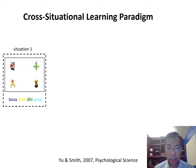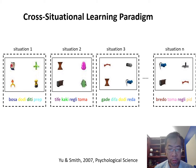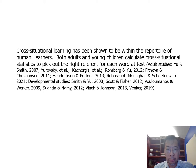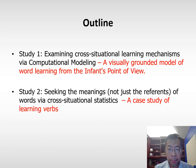This idea has been implemented by a cross-situational learning experimental paradigm first reported in 2007. In this paradigm, there are multiple words and multiple objects in each learning situation with perfect mappings between word and object. However, there's no information in the situation telling the learner which word goes to each object. Across multiple learning situations, if the learner aggregates statistical evidence, the learner can figure out the correct word-referent mappings. Many studies have shown that both adults and young children calculate cross-situational statistics to pick out the right referent for each word at test.